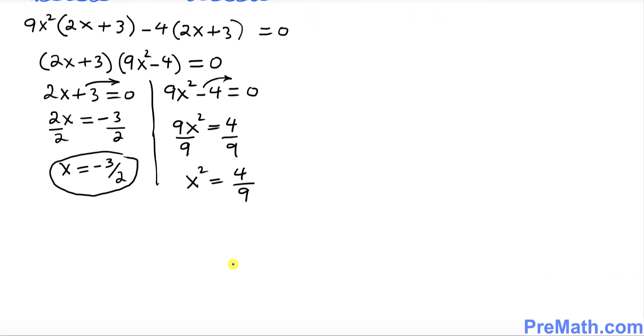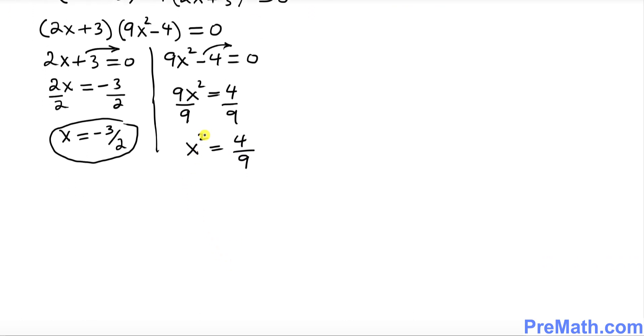Now the next thing is, take the square root because we want to remove this square. Take the square root on both sides. This square and square root undo each other, so we got x = ± (√4/√9). The square root of 4 is 2 and the square root of 9 is 3.